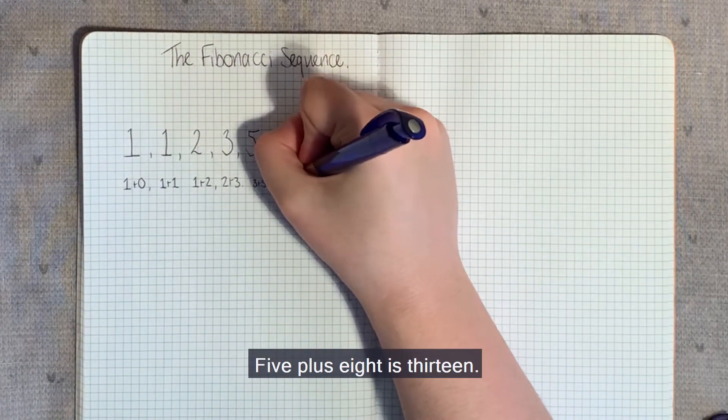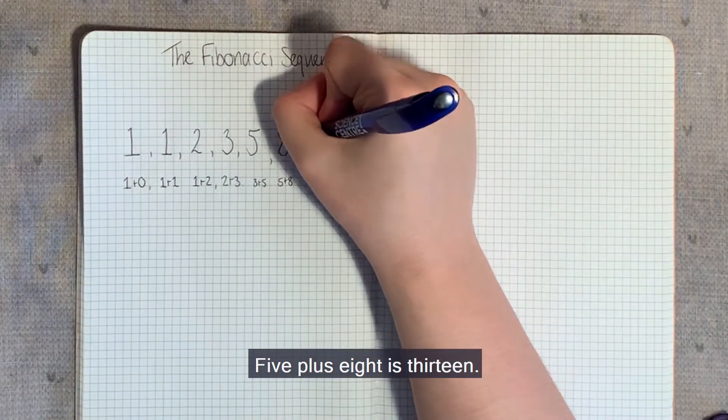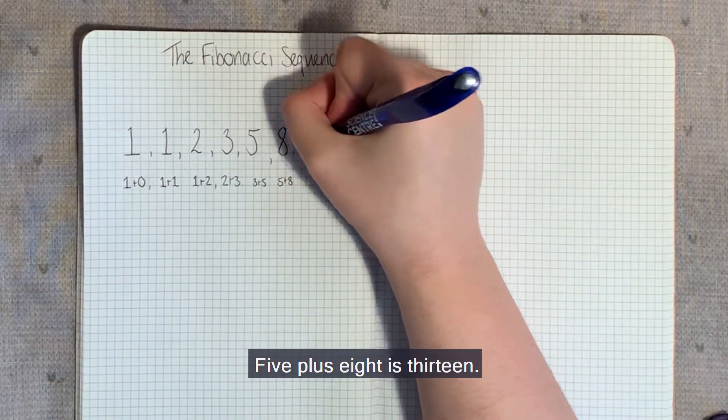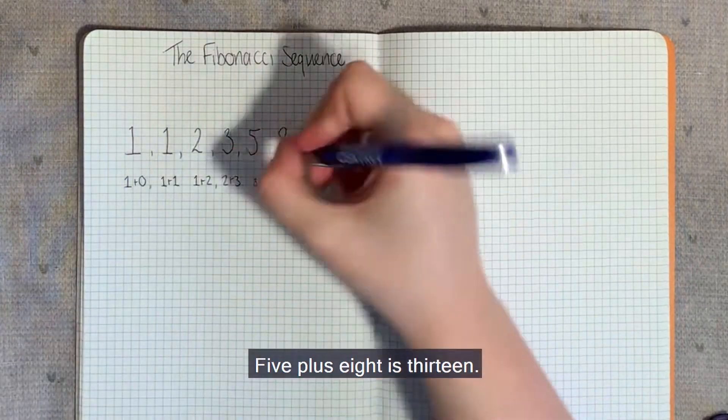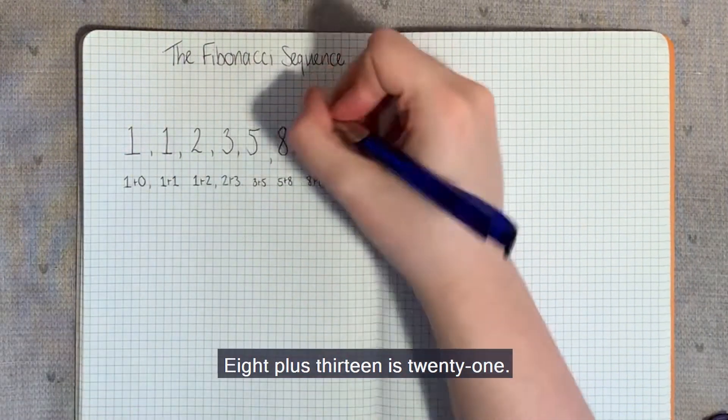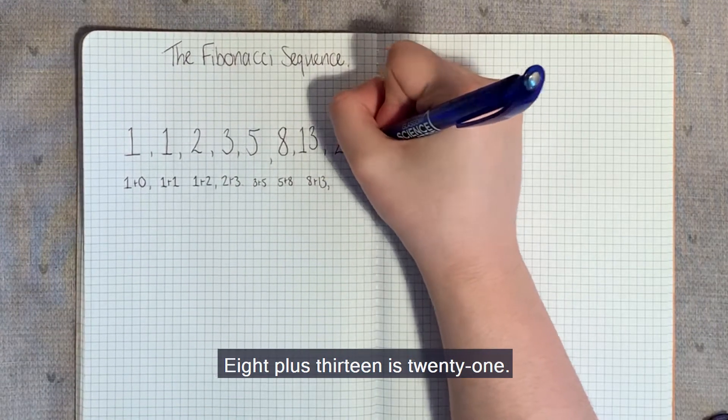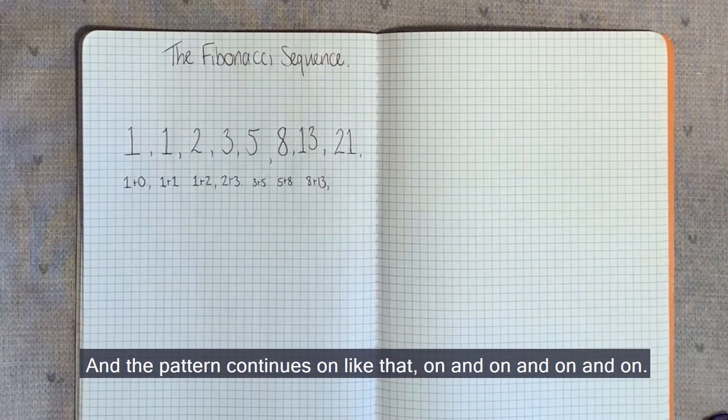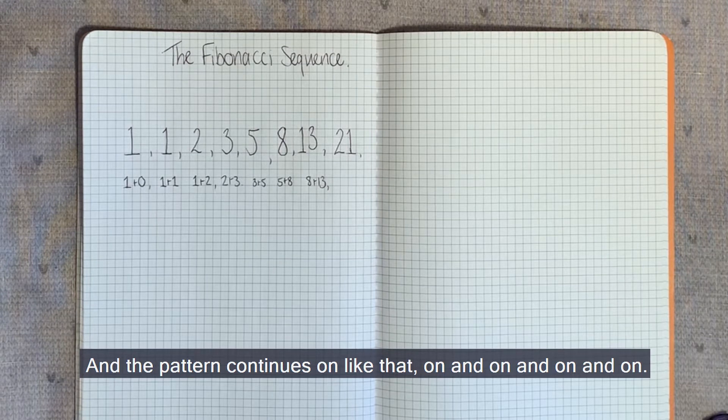Three plus five is eight, five plus eight is thirteen, eight plus thirteen is 21. And the pattern continues on like that, on and on and on.